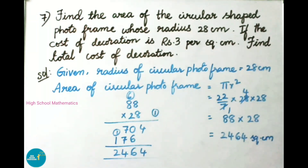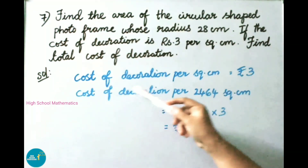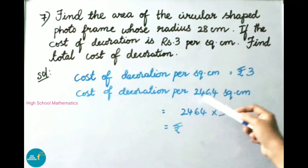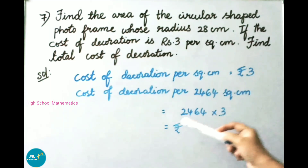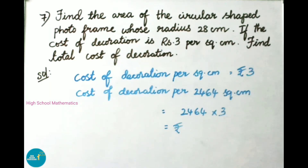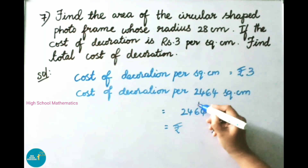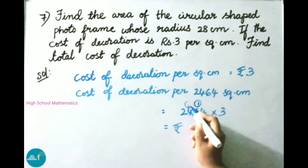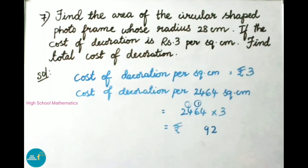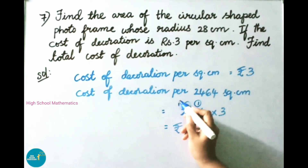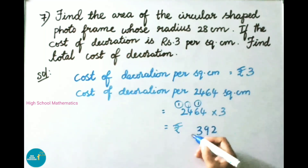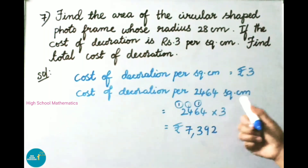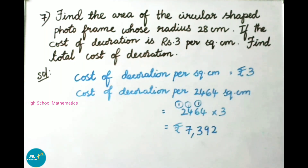Now we have to find the total cost of decoration. Cost of decoration per square cm is 3 rupees. Cost of decoration per 2464 square cm is 2464 into 3. Multiplying: 2464 into 3 equals 7,392 rupees. Therefore the cost of decoration per 2464 square cm is 7,392 rupees.